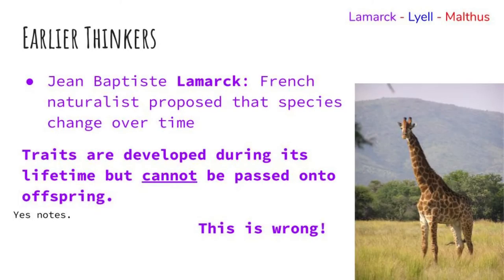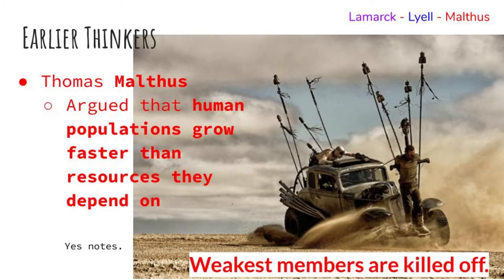Jean-Baptiste Lamarck was a French naturalist, and he proposed that species changed over time — so Darwin was definitely not the first person to think this. However, Lamarck believed that traits developed spontaneously: because giraffes needed to reach higher to eat the leaves of tall trees, the need to eat stimulated the transmission of a longer neck to offspring. That is not how it happens. We now know that traits developed during a lifetime cannot be passed on to offspring unless it's a germline mutation in an egg cell or sperm cell. He had the correct idea that species change over time, but the methodology was not correct.